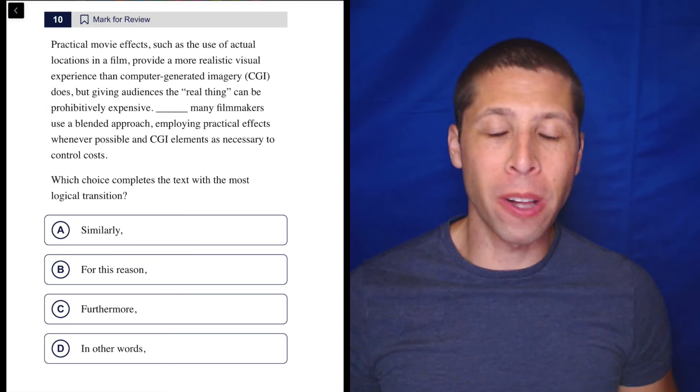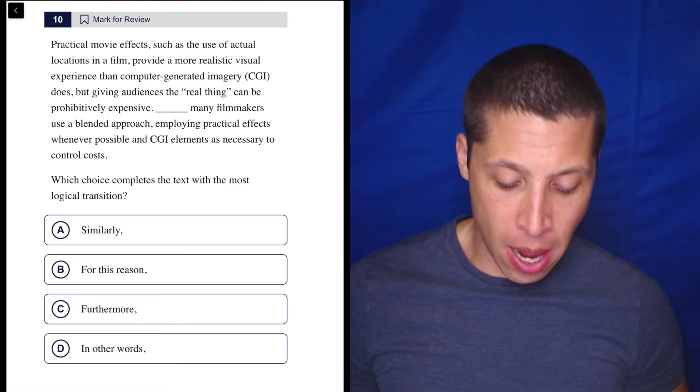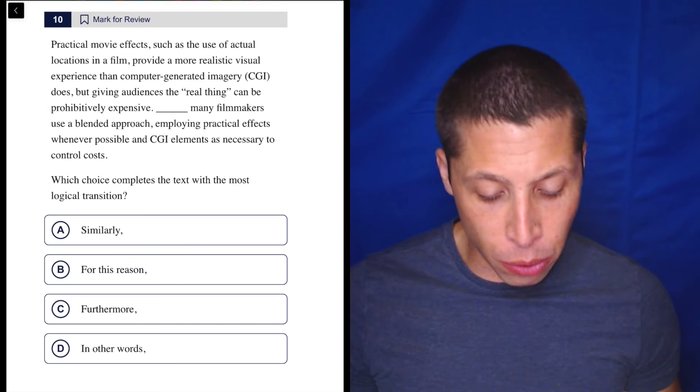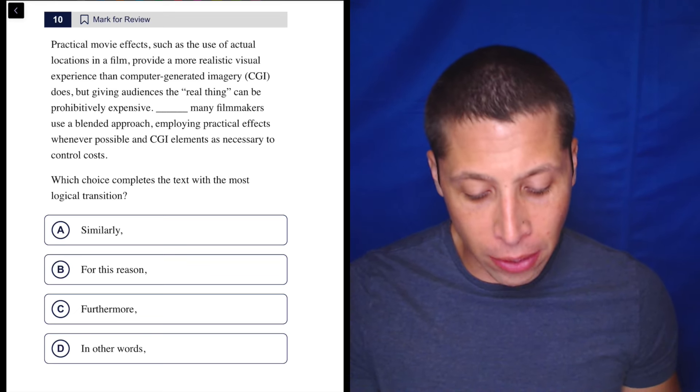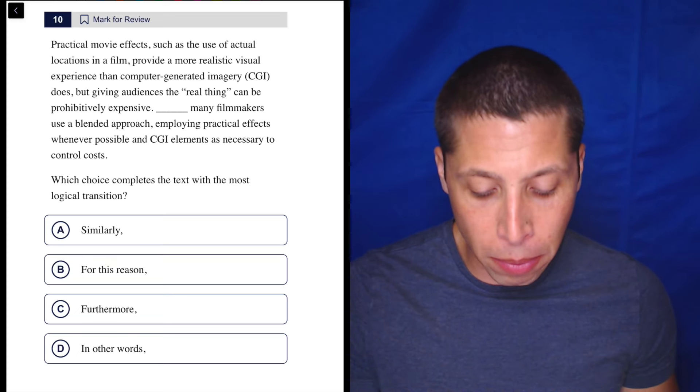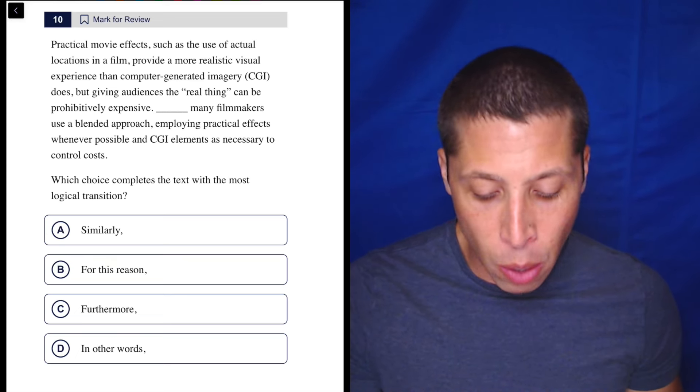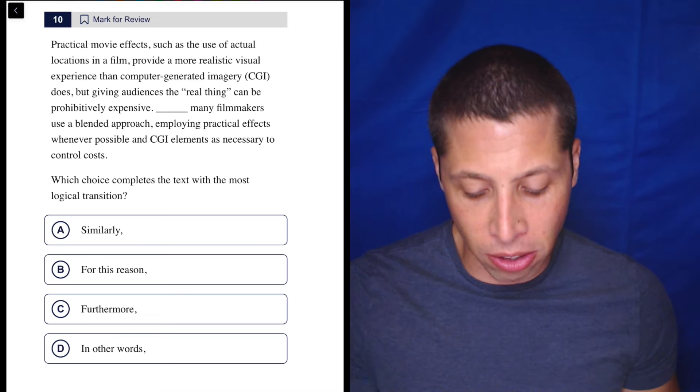A lot of very common transition words in this one, so let's just get right to the passage. Practical movie effects, such as the use of actual locations in a film, provide a more realistic visual experience than computer-generated imagery does. But giving audiences the real thing can be prohibitively expensive. Many filmmakers use a blended approach, employing practical effects whenever possible and CGI elements as necessary to control costs.